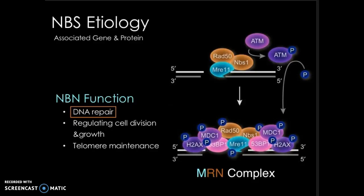Once joined, Nibrin acts as a transporter and takes the other proteins to the site of DNA damage. After the damage is located, the MRN complex activates an ATM kinase that is responsible for carrying out the remainder of the DNA repair. Because of this action, helping to prevent the accumulation of DNA errors which could potentially lead to uncontrolled cell growth, Nibrin is considered a tumor suppressor protein.